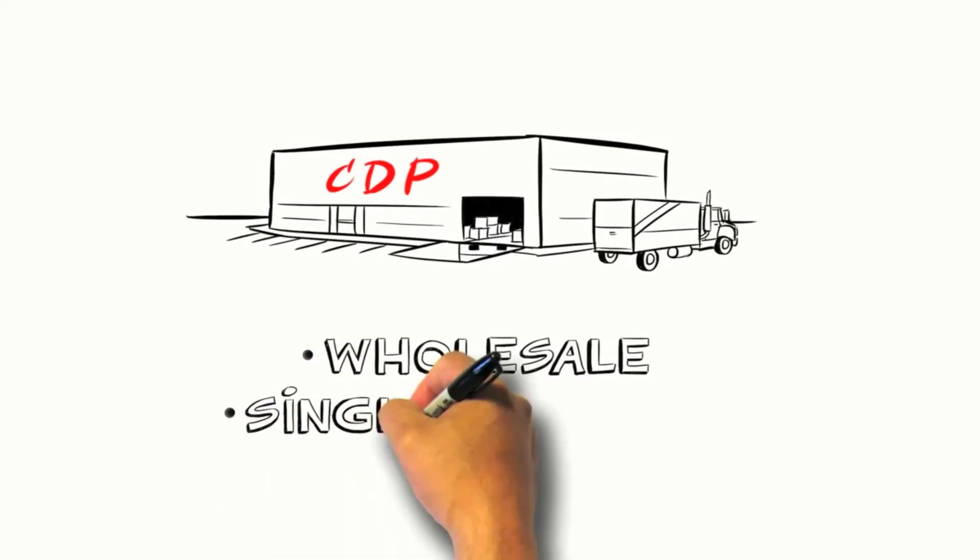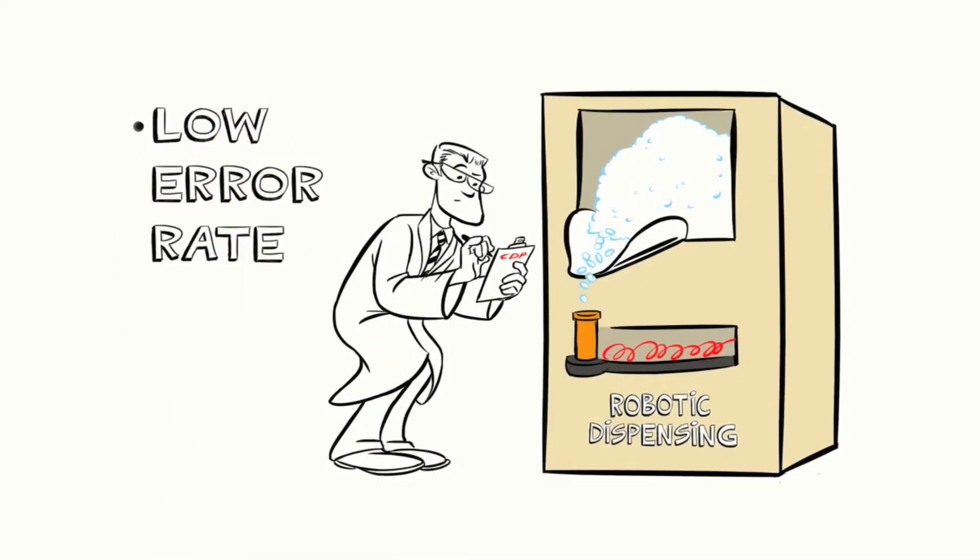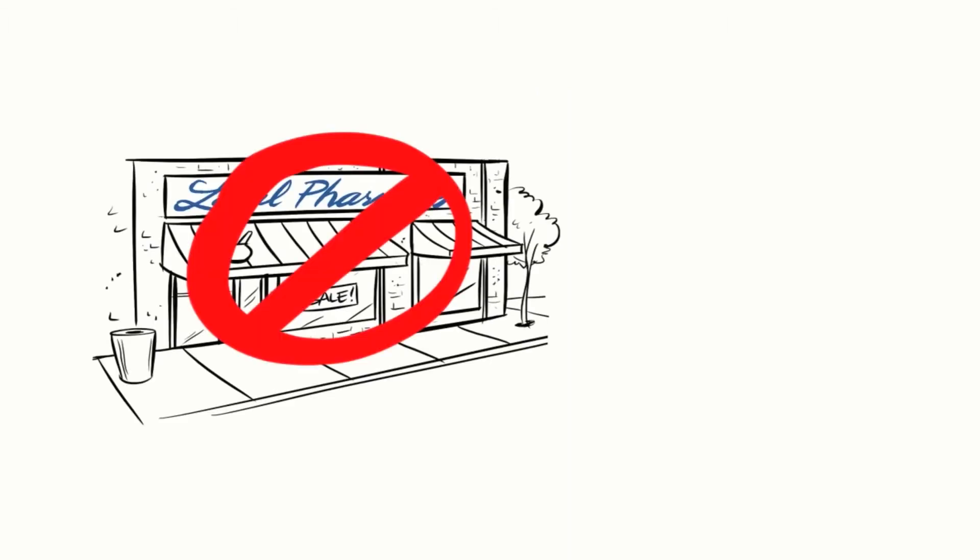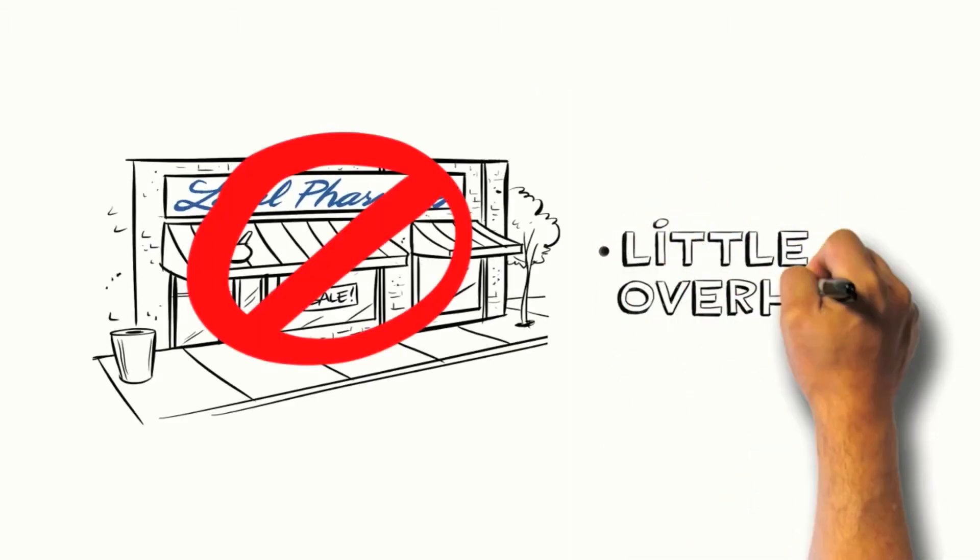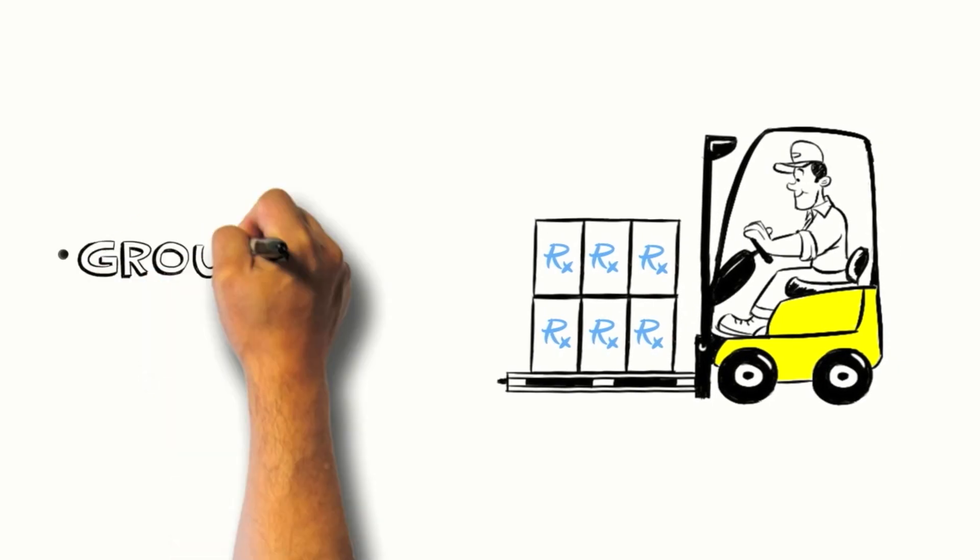It has a low error rate because it uses robotic technology, and because it doesn't have a retail storefront, it also has little overhead. The wholesale nature of the CDP combined with our group buying power means we've been able to secure low dispensing fees and discounted ingredient costs.